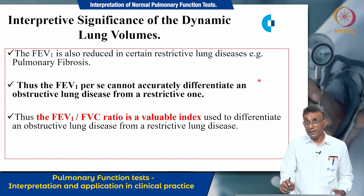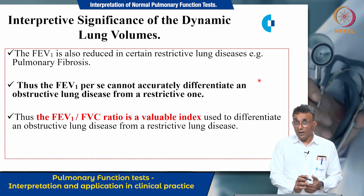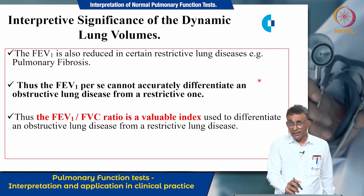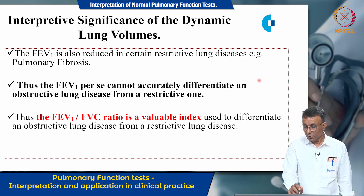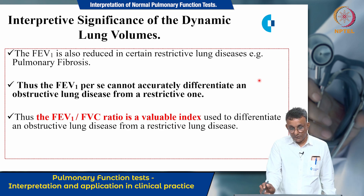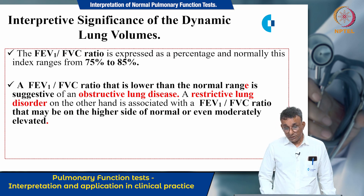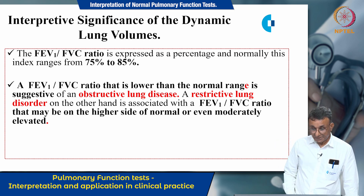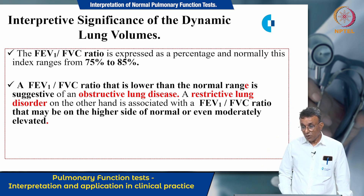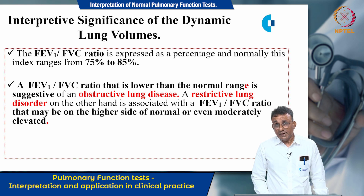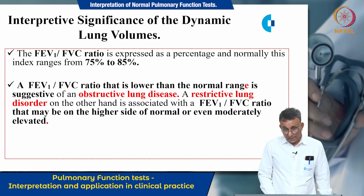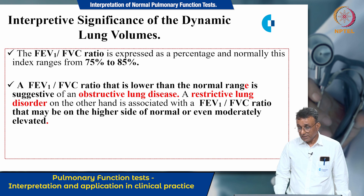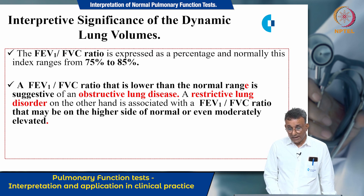To differentiate whether a person has a restrictive or obstructive problem, we use the FEV1/FVC ratio, which is a valuable index for this purpose. Expressed as a percentage, this ratio normally ranges from 75% to 85%. When the FEV1/FVC ratio falls below the normal range, it is highly suggestive of an obstructive lung disease. Restrictive lung disease, on the other hand, is associated with an FEV1/FVC ratio that may be on the higher side of normal or even moderately elevated.